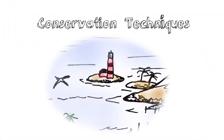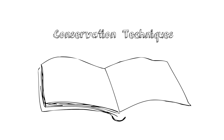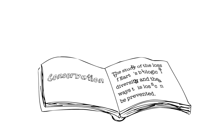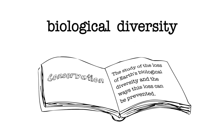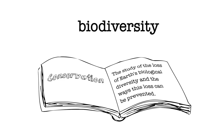I often find it helpful to look at a formal definition of a term in order to jumpstart some ideas about an interesting topic. For this video, the term I want to look at is conservation. It's been defined as the study of the loss of Earth's biological diversity and the ways this loss can be prevented. So right there, up front, biodiversity is a fundamental part of the very definition of conservation.